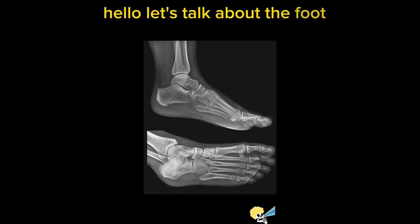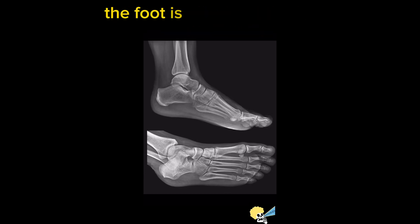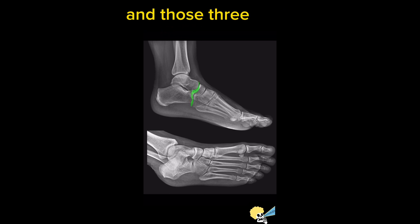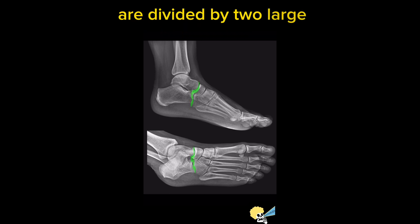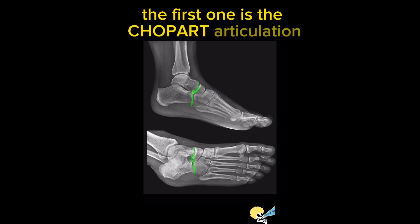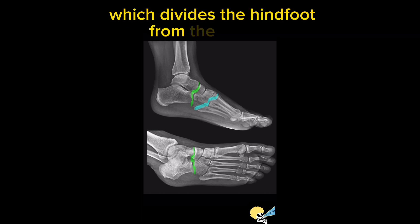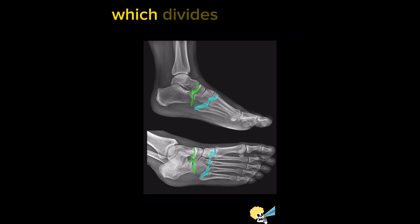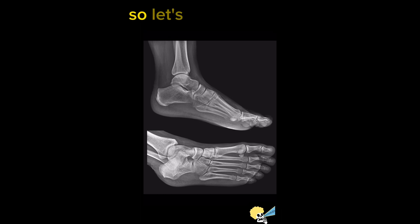Let's talk about foot X-ray anatomy. The foot is divided into three major sections, divided by two large articulations. The first is the Chopart articulation, which divides the hind foot from the mid foot, and the second is the Lisfranc articulation, which divides the mid foot from the forefoot.